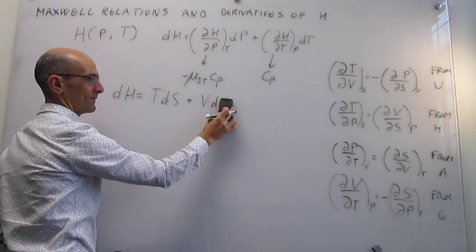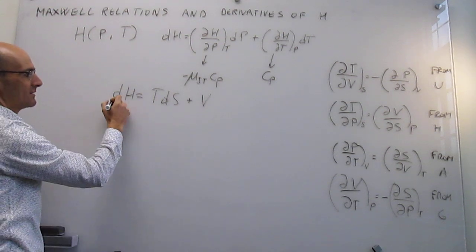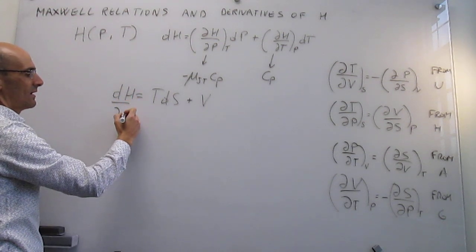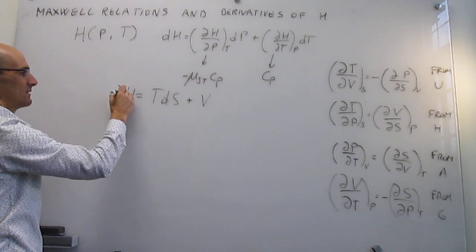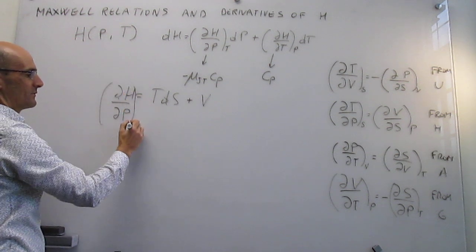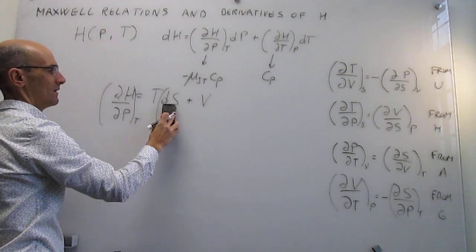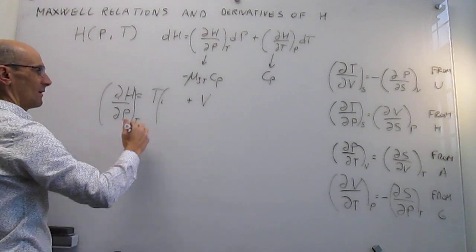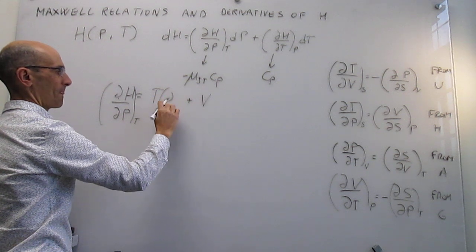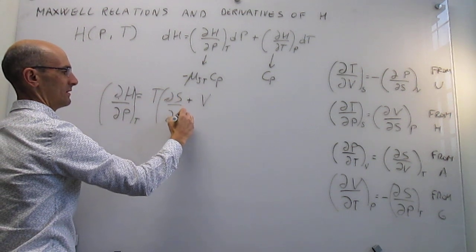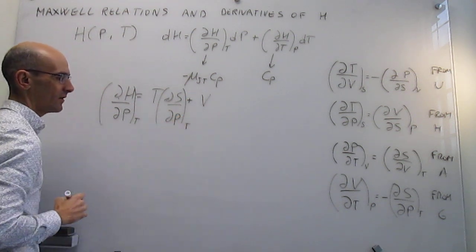For that, the only thing that we have to do is divide over differential of P and enforce constant temperature conditions. So we can make this now a partial derivative with respect to pressure at constant temperature. And that means that this term also becomes a partial derivative of the entropy with respect to pressure, and again, we're enforcing constant temperature conditions.